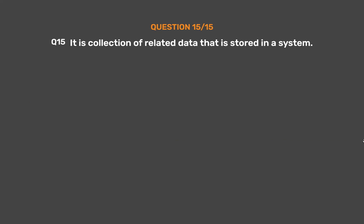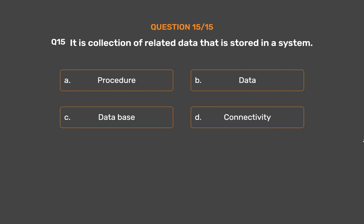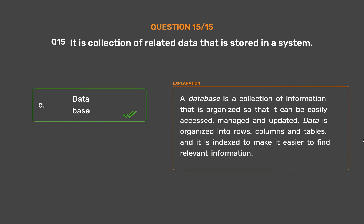Question No. 15. It is a collection of related data that is stored in a system. Option A: Procedure. Option B: Data. Option C: Database. Option D: Connectivity. The correct answer is Option C — Database. A database is a collection of information that is organized so that it can be easily accessed, managed and updated. Data is organized into rows, columns and tables, and it is indexed to make it easier to find relevant information.